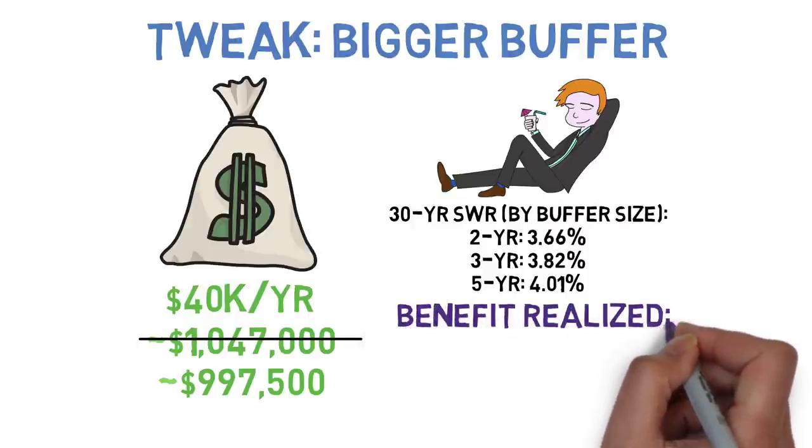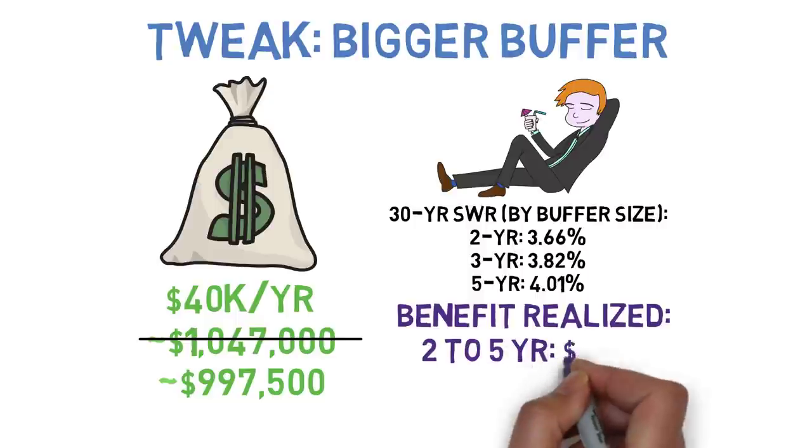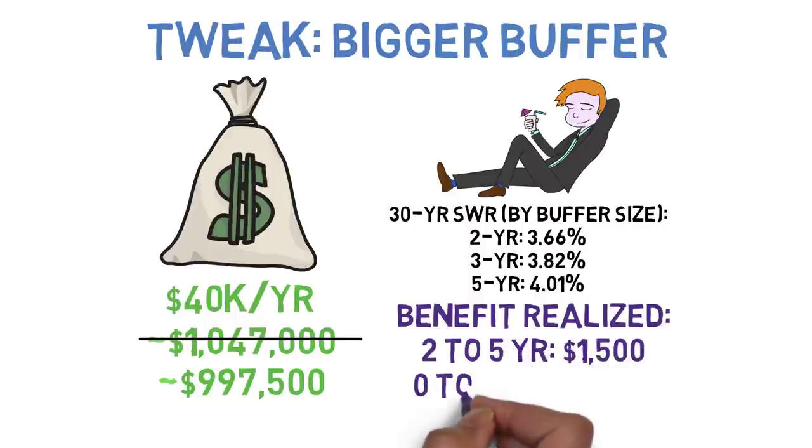With a five-year buffer you'd need around $997,500 or about $49,500 less. So by putting away $48,000 towards a larger cash buffer you're saving yourself from having to build up $49,500 in your nest egg. It's still technically a net positive but may not be worth the extra time and effort for many.